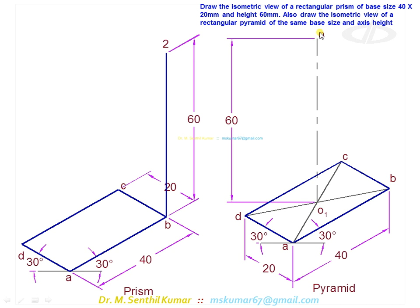Through O1, draw O1-O. That is equal to the height of the solid—the axis height in the case of the pyramid. This is the vertical height of the solid in the case of the prism.